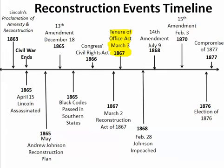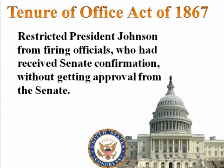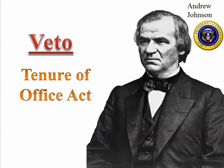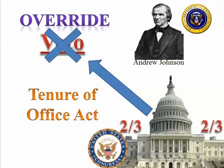In 1867, on March 3rd, the Tenure of Office Act was passed. It restricted President Andrew Johnson — or any president — from firing an official who had received Senate confirmation without getting approval of the Senate. Andrew Johnson vetoed this law as well, and once more Congress overrode his veto by two-thirds vote of both houses, putting in place the Tenure of Office Act. This meant he couldn't fire anyone without the consent of the Senate.